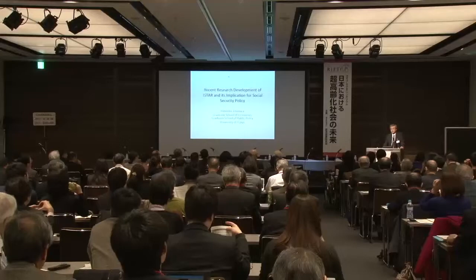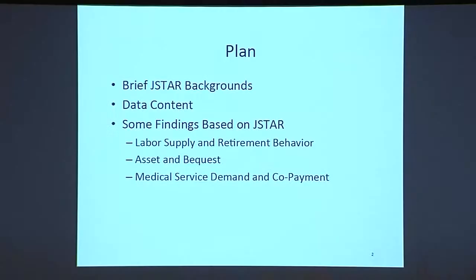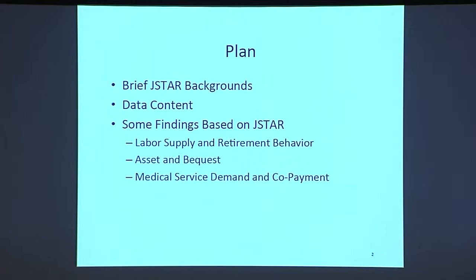Let me summarize a few examples of recent research done using the JSTAR to explain the kind of contributions that this type of data — detailed micro-level data with a panel structure — can deliver. I'll first explain the JSTAR background briefly, then explain what kind of data it contains, and go through three basic examples: one on labor supply and retirement behavior, a second on assets and bequests, and the third on medical service demand and co-payment relationships.